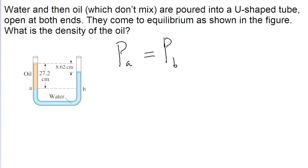So what we can do in this problem is write out more elaborate expressions for P sub A and P sub B, and then go from there to find the density of the oil. So first off, let's start with P sub A. So the pressure at point A, first there's going to be the atmospheric pressure, P naught.